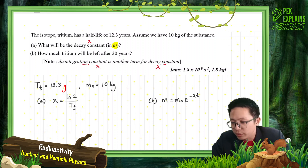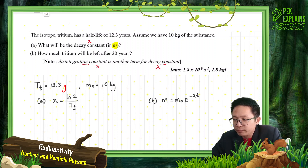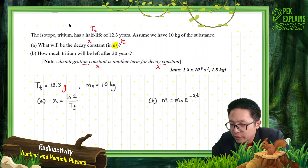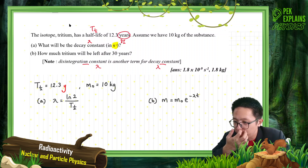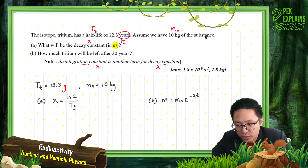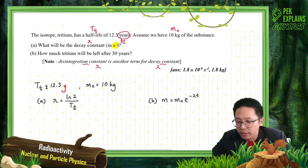Pay attention to the unit — we want lambda in SI units, per second. The given information is the half-life in years, so we need to convert it to seconds. The initial mass is 10 kilograms.